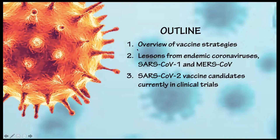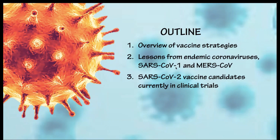I want to go over an overview of the vaccine strategies. I want to go back to the endemic coronaviruses and the other two big coronavirus outbreaks from many years ago, because I think it's important to understand a little bit about them to understand how we could catapult so quickly forward into the SARS-CoV-2 vaccine.